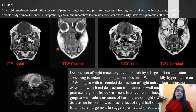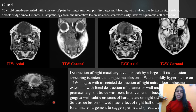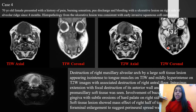In the next case, a female presented with a history of pain, burning sensation, discharge, and bleeding with an ulcerative lesion in the right side of the alveolar ridge for four months. On MRI, we can see destruction of the right maxillary alveolar arch by a large soft tissue lesion appearing isointense to tongue muscles on T1-weighted images and mildly hyperintense on T2-weighted images, with associated destruction of the right antral floor. Intra-sinus extension was also seen.